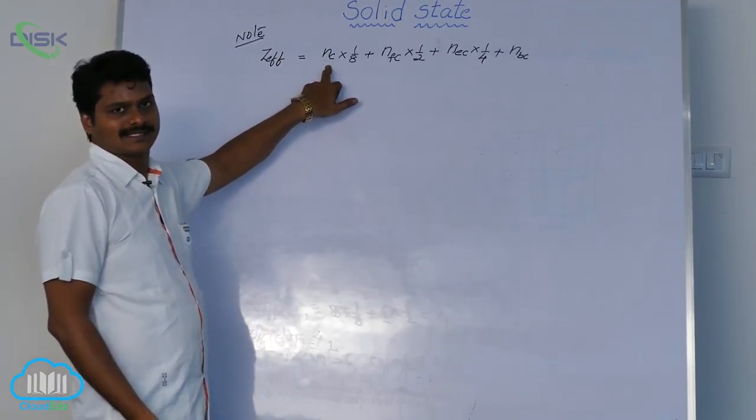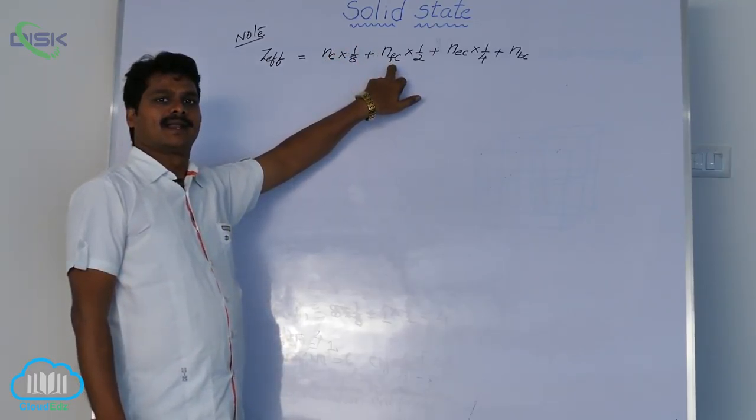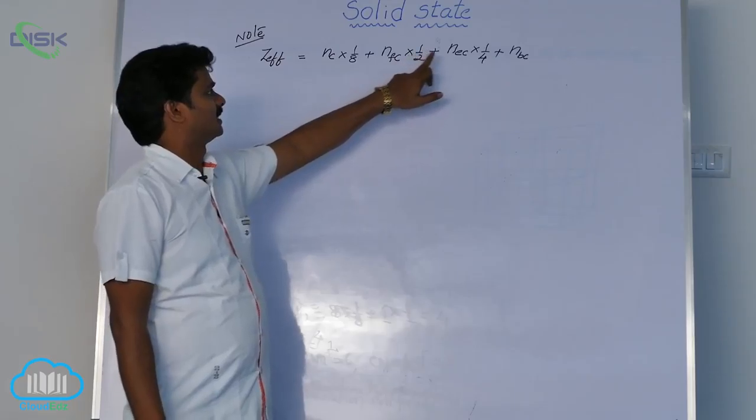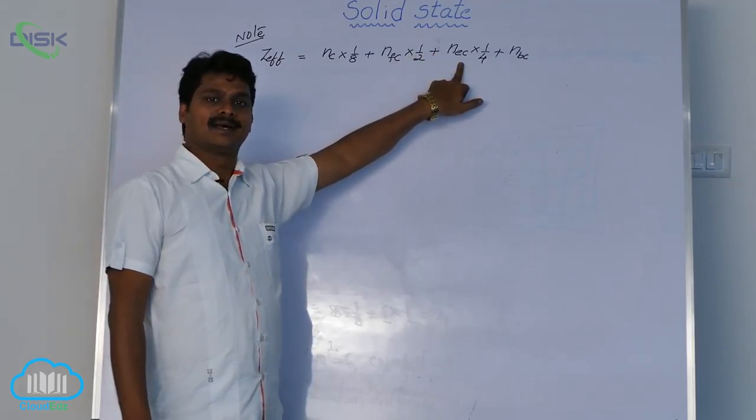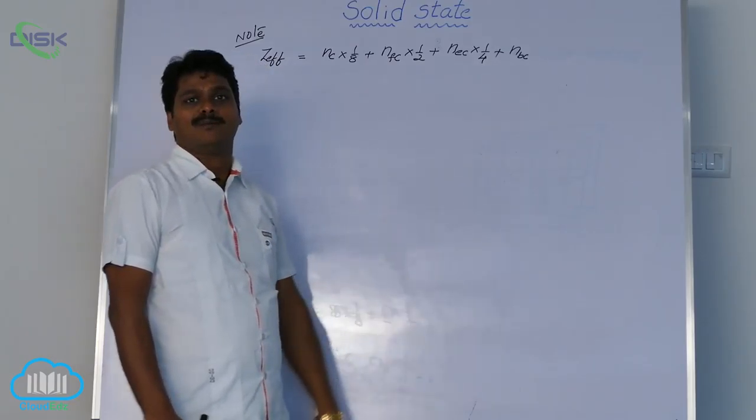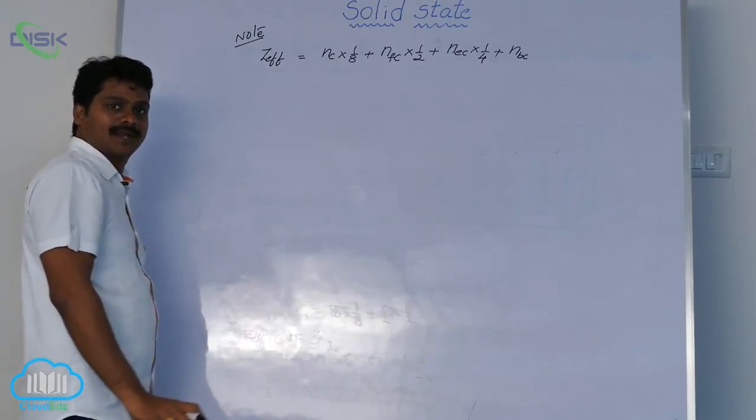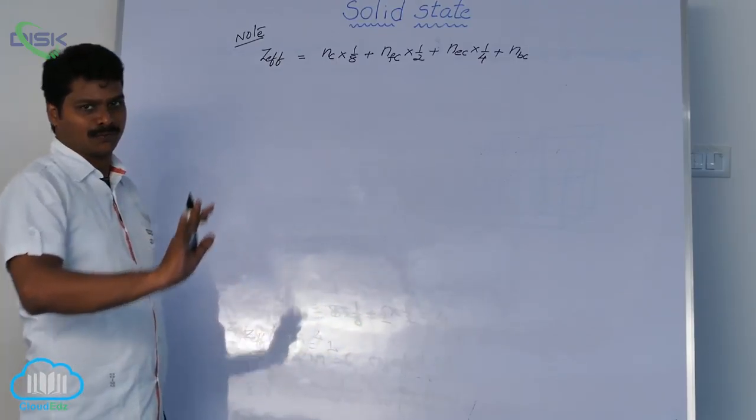Where Nc is number of corner atoms, Nfc is number of face centered atoms, Nec is number of edge centered atoms, Nbc is the number of body centered atoms. In short, we can write this formula to calculate Z effective for any cubic lattice.